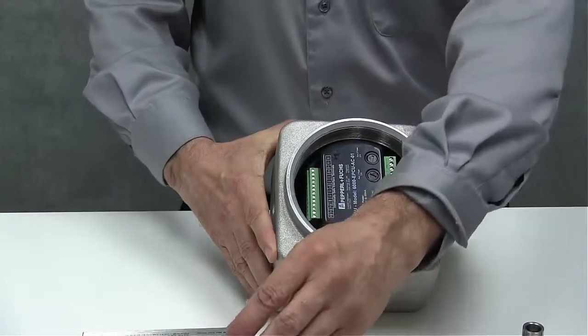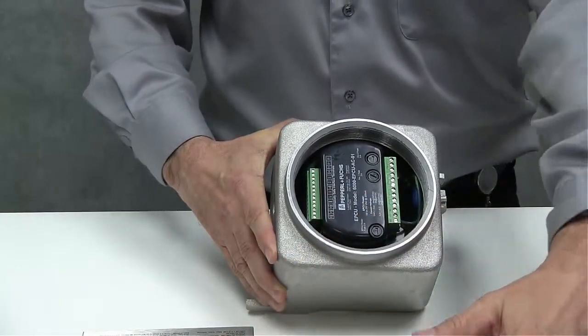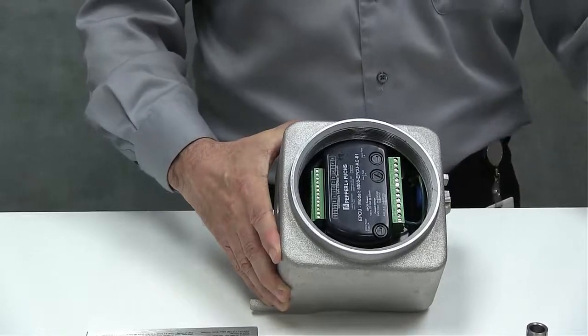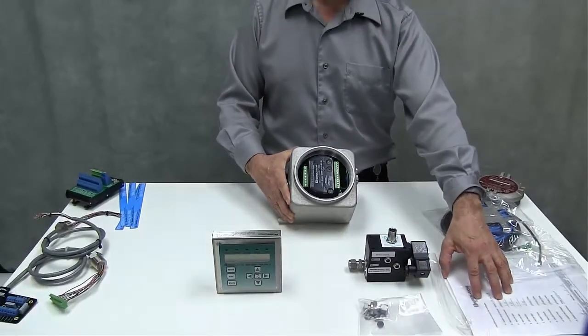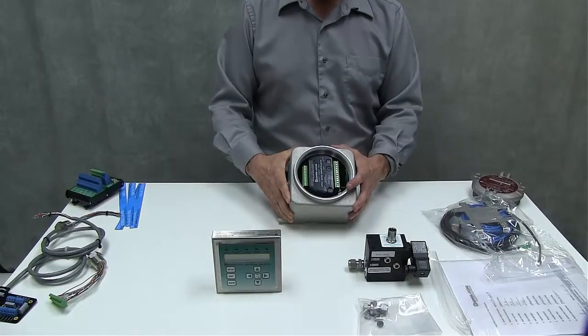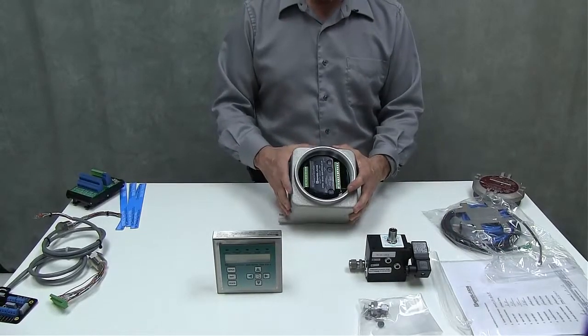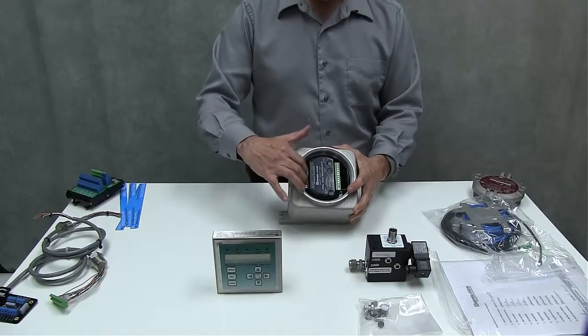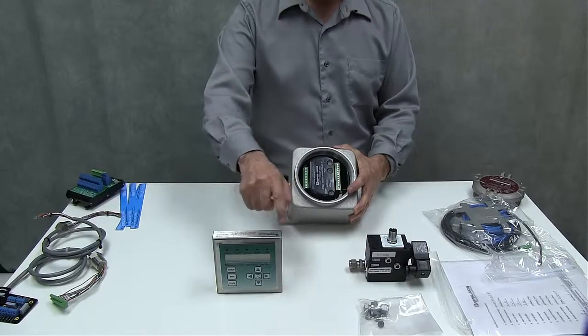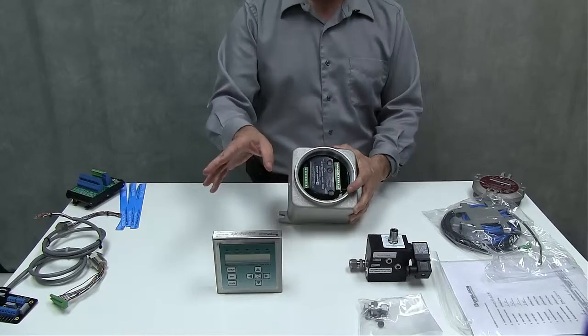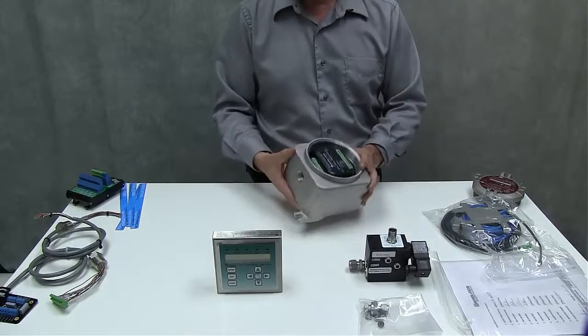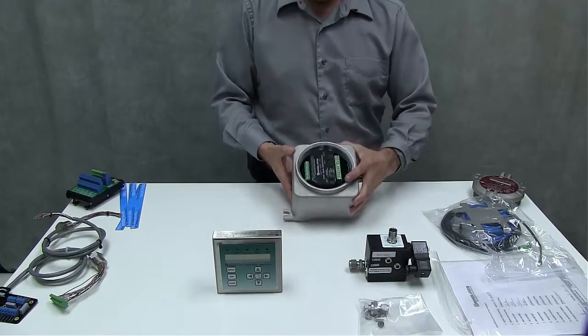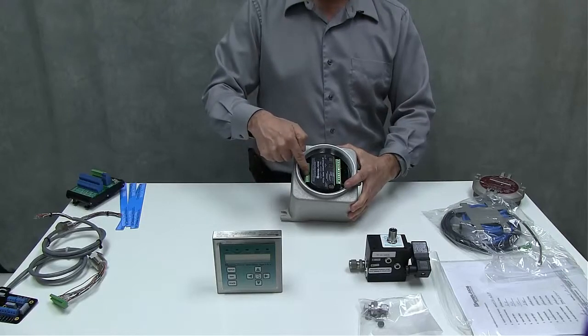Along with the component kit you get the user interface, the solenoid valve with some mounting hardware and some other mounting hardware with cabling and a manual on how to operate the system. The problem is with the component kit all this field device wiring from the IS termination board, the solenoid valve, the vent and any type of inputs you have coming in have to come in through this cable gland and have to terminate onto these terminals.